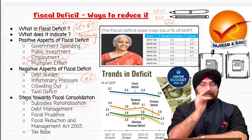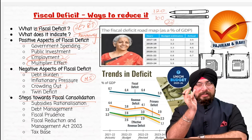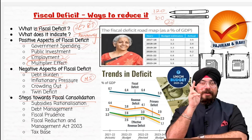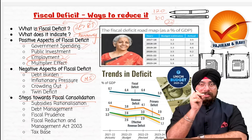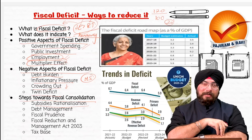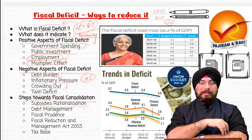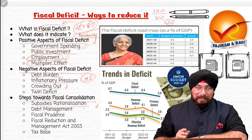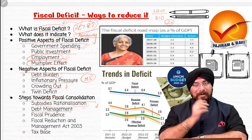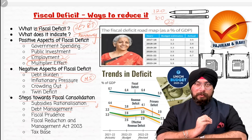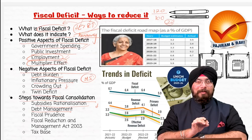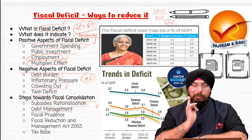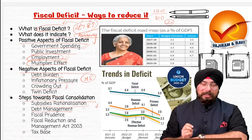When we rationalize those subsidies and provide them in a targeted manner only to those who really need it, we will be able to substantially reduce our expenditure and ultimately achieve fiscal consolidation. Then debt management: we need to manage our borrowings very carefully. We need to look for avenues which give us cheaper interest rates and borrow from those sources. We also need to be very prudent when borrowing. Proper debt management needs to be there.